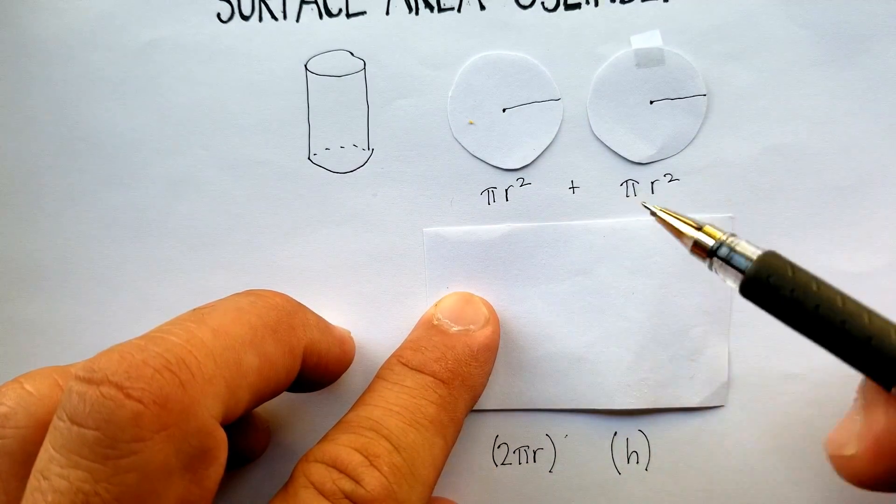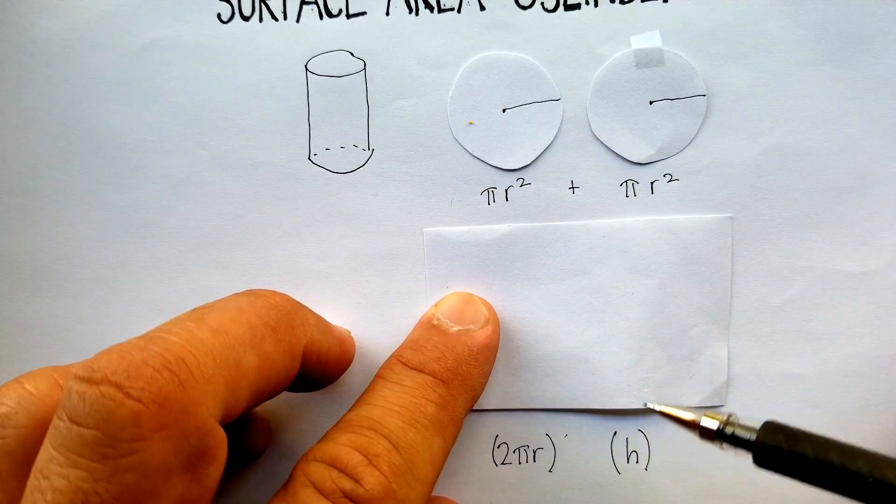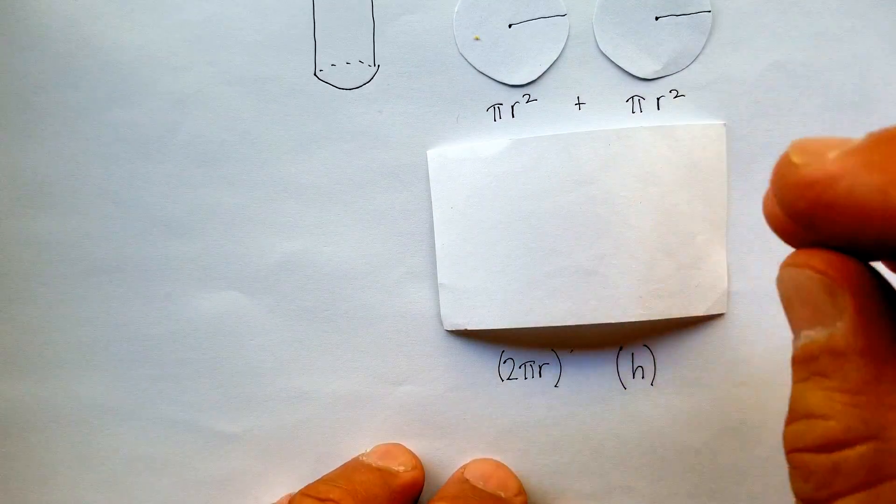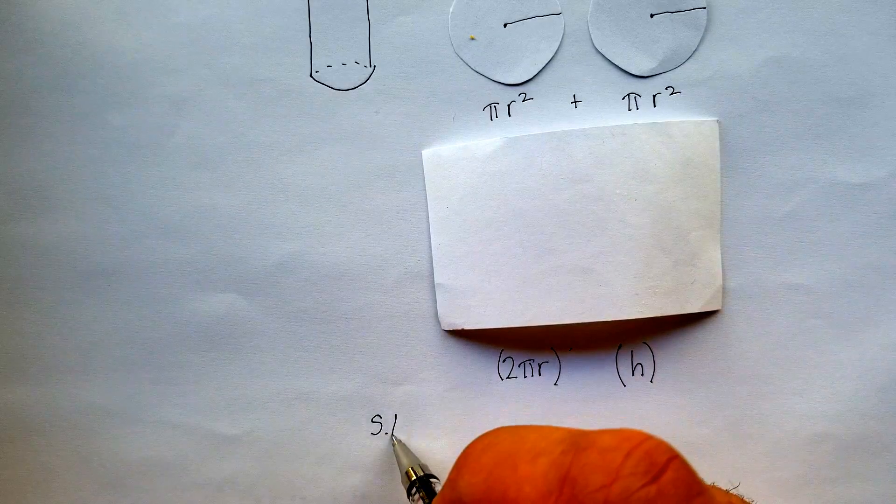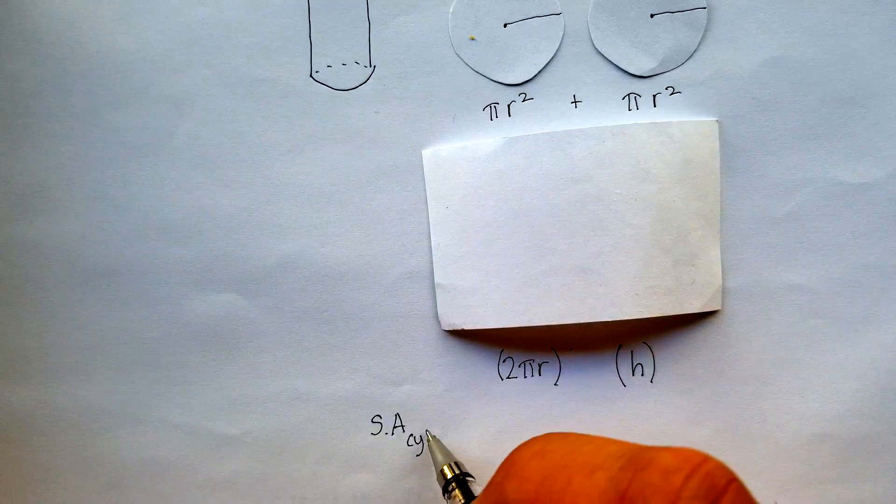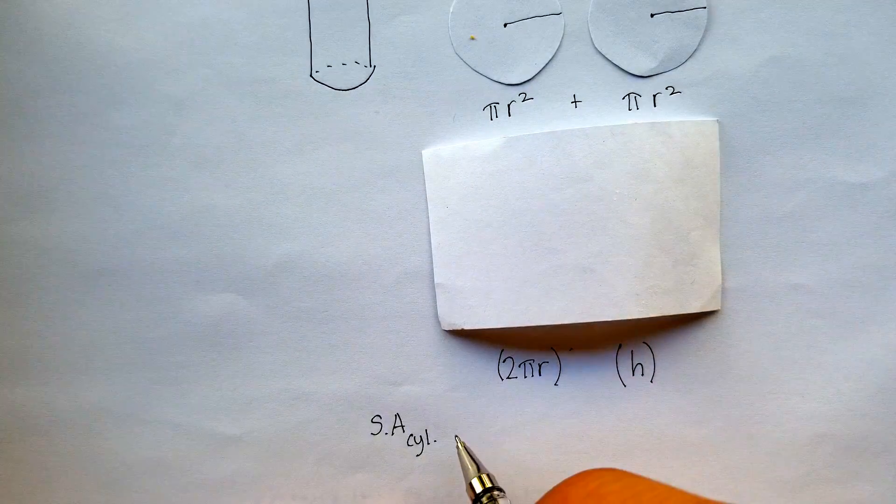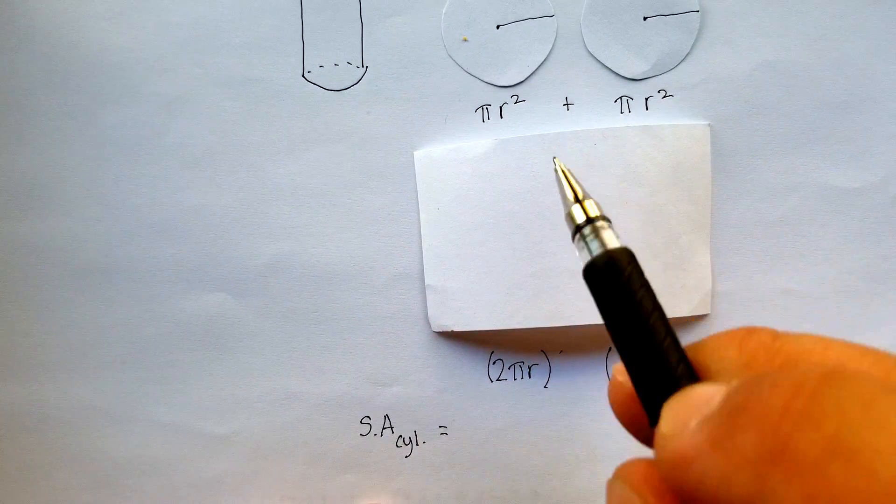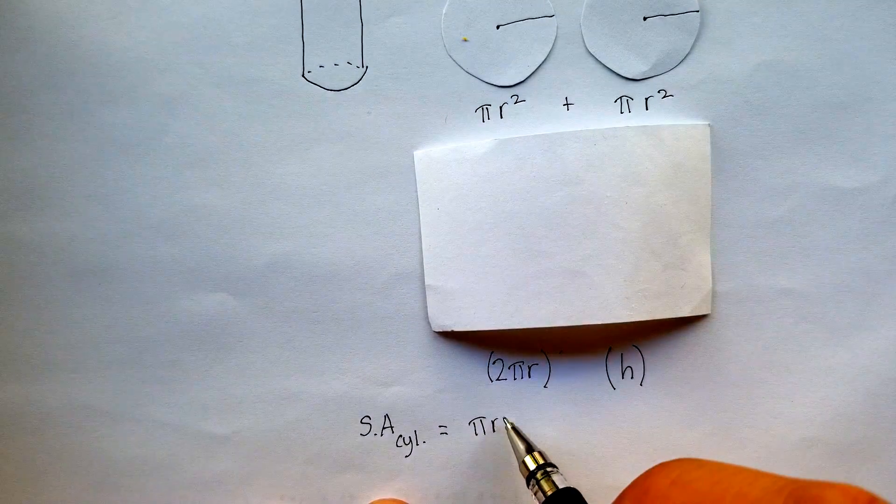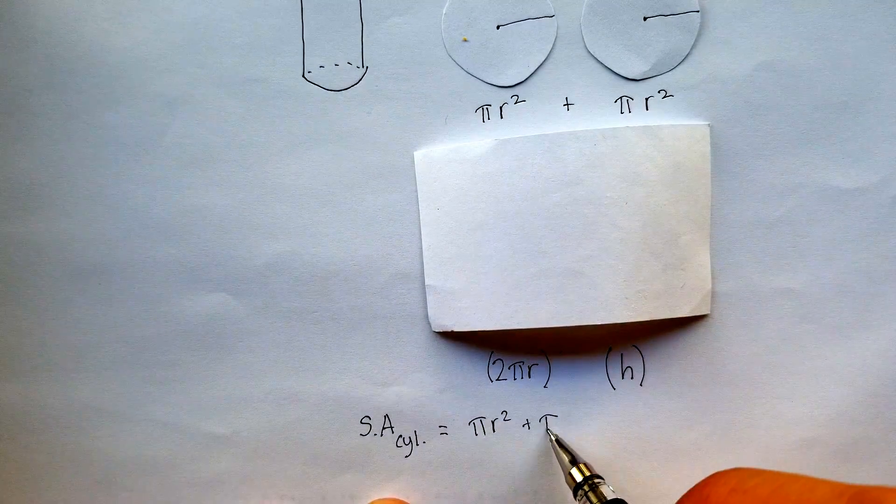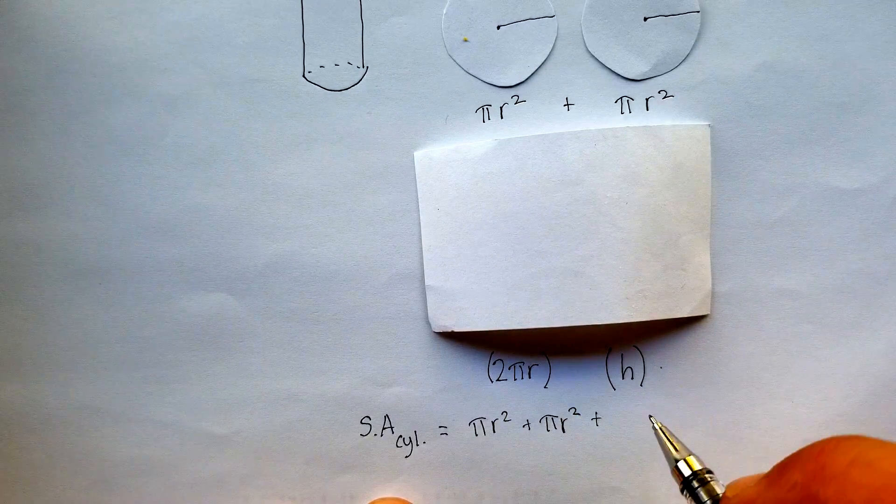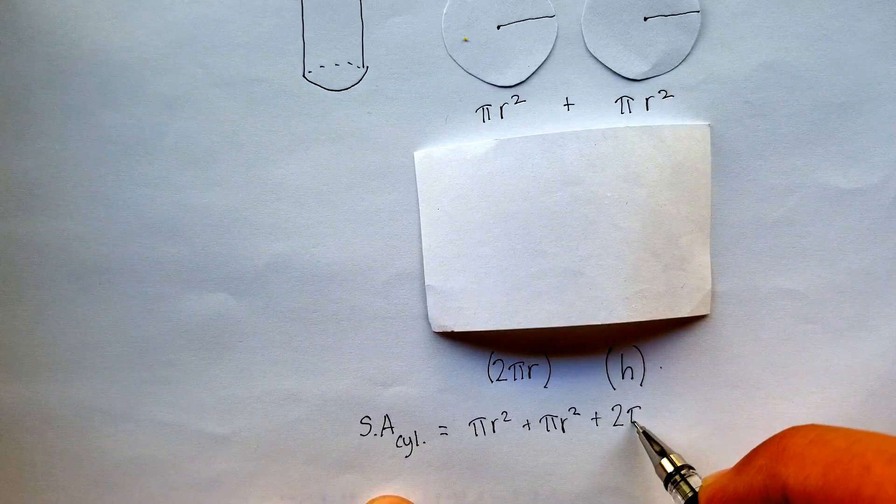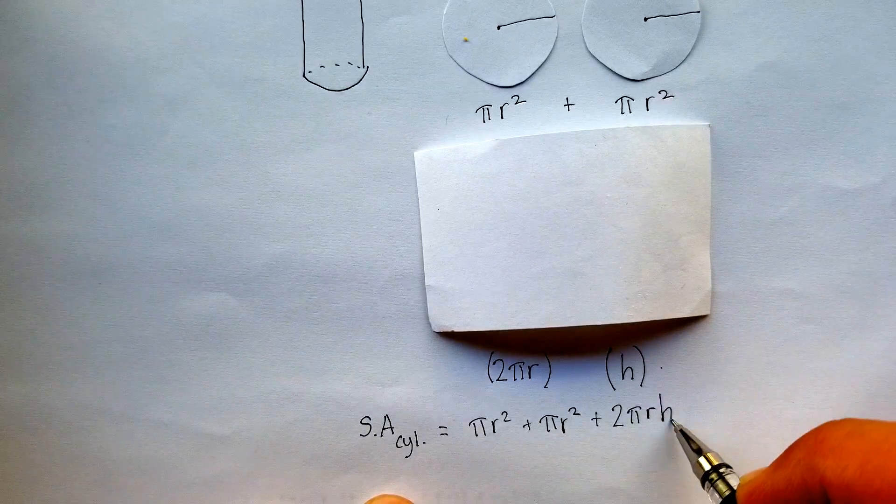And to get the surface area of everything you're going to add up all of these together. So the surface area of a cylinder is equal to πr² plus πr² plus, let's just multiply this out, 2πrh.